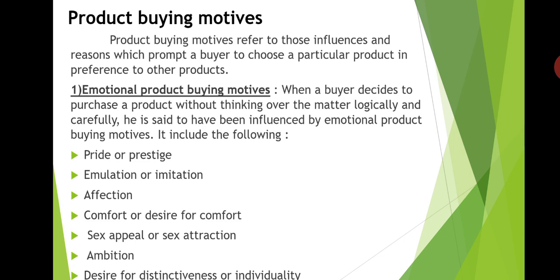Next, affection. Some products are purchased by buyers because of their affection or love for others. For example, a husband may buy a costly silk sari for his wife, or a father may buy a costly watch for his son. Affection or love for others is one of the stronger emotional buying motives, influencing the purchasing decision of buyers.